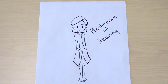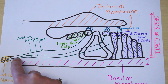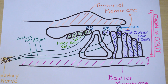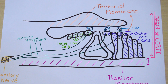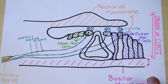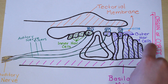Now we're going to talk about the mechanism of hearing. The mechanism of hearing occurs in the organ of Corti, which is composed of everything above the basilar membrane. As sound enters the cochlea, the basilar membrane moves up and down, and as this movement occurs, the organ of Corti moves up and down as well.